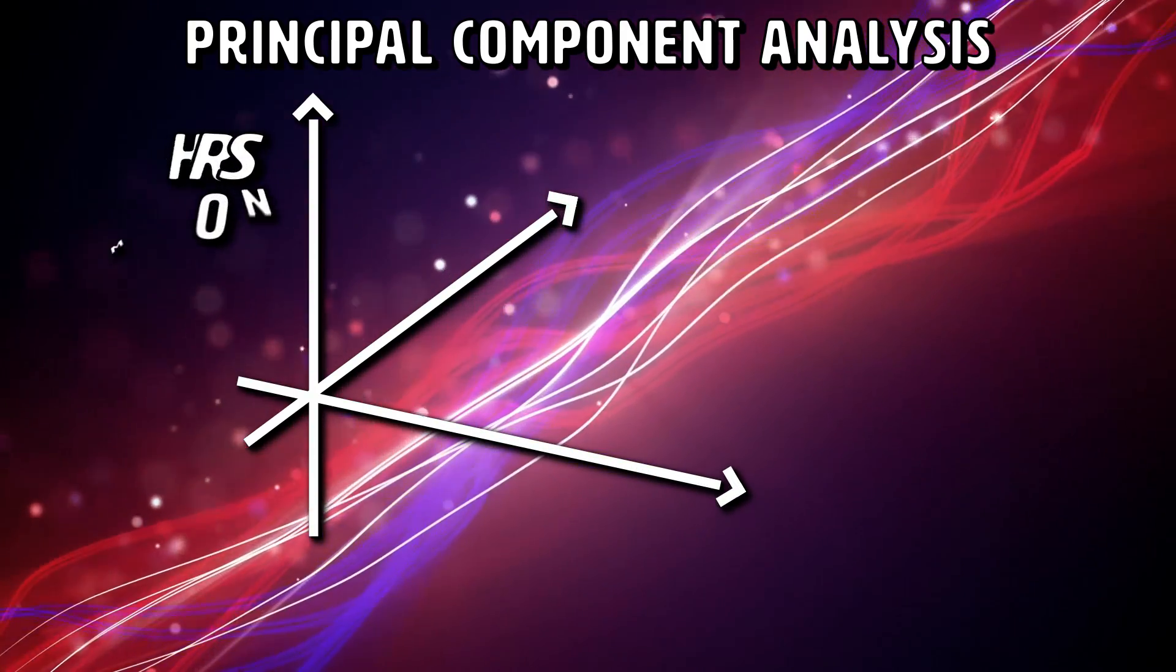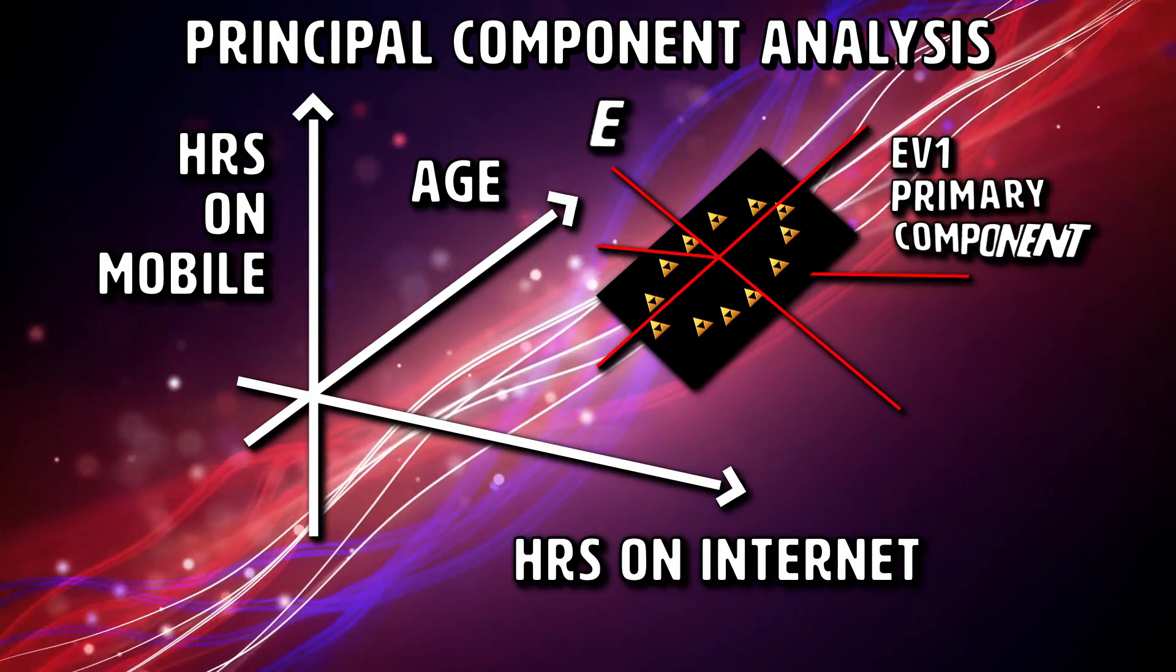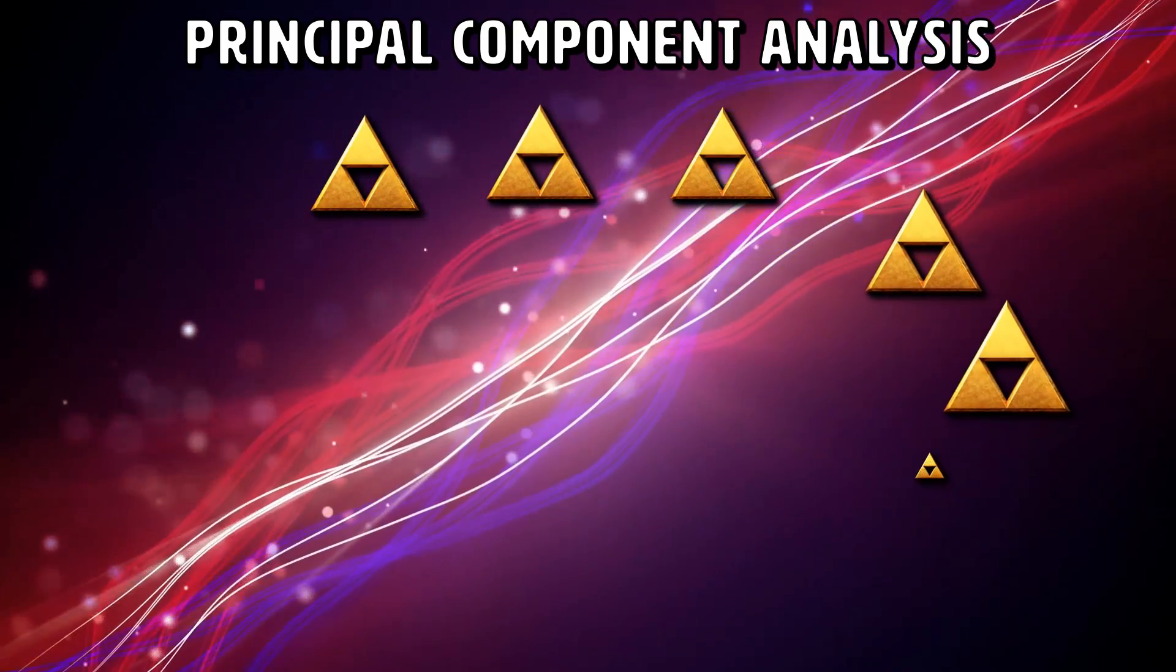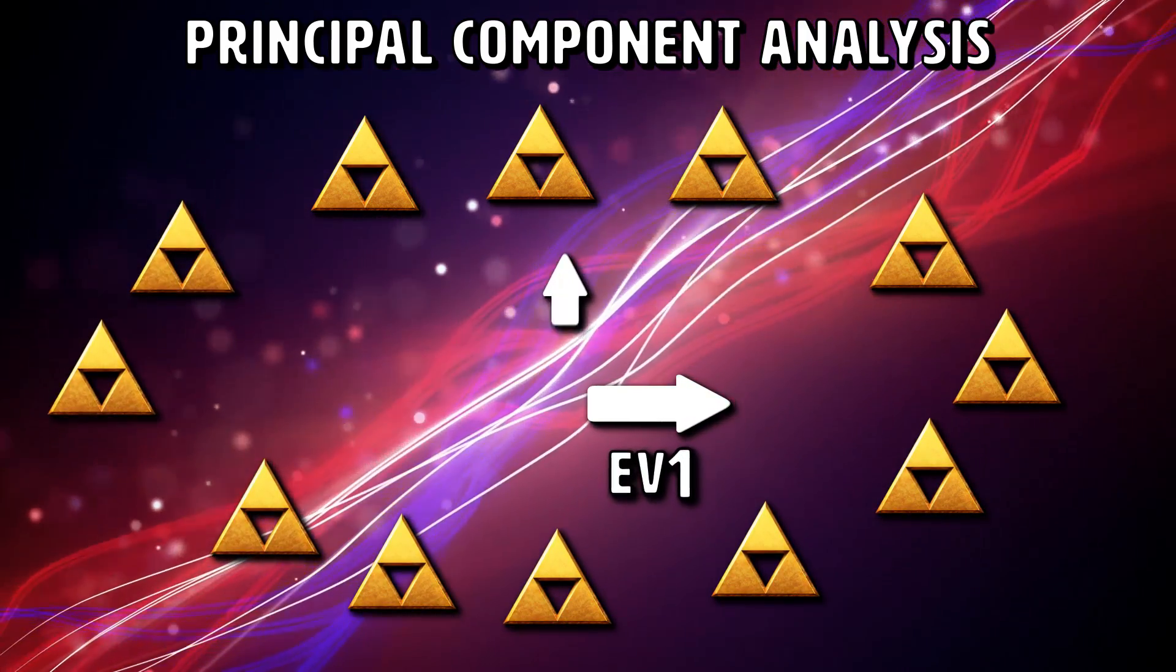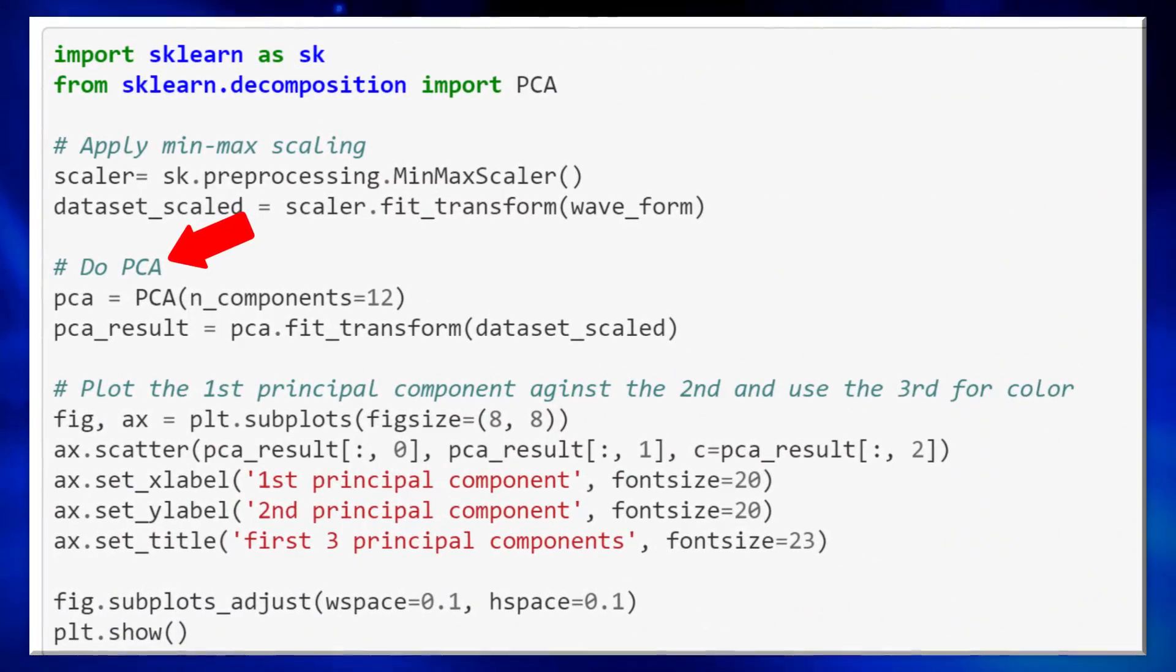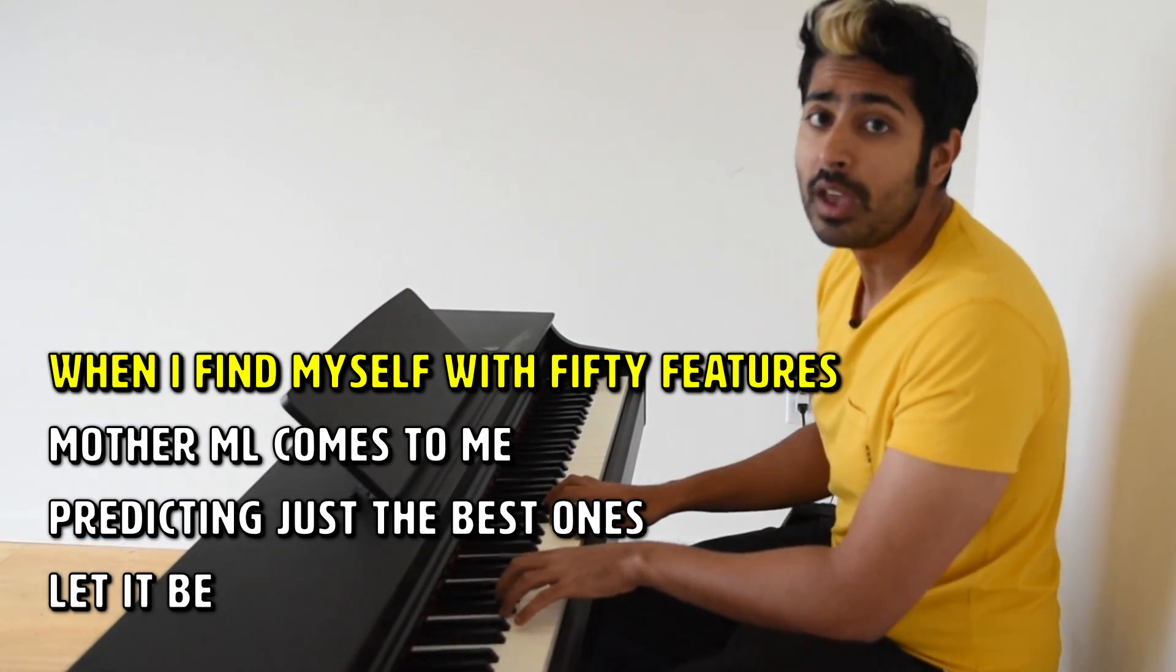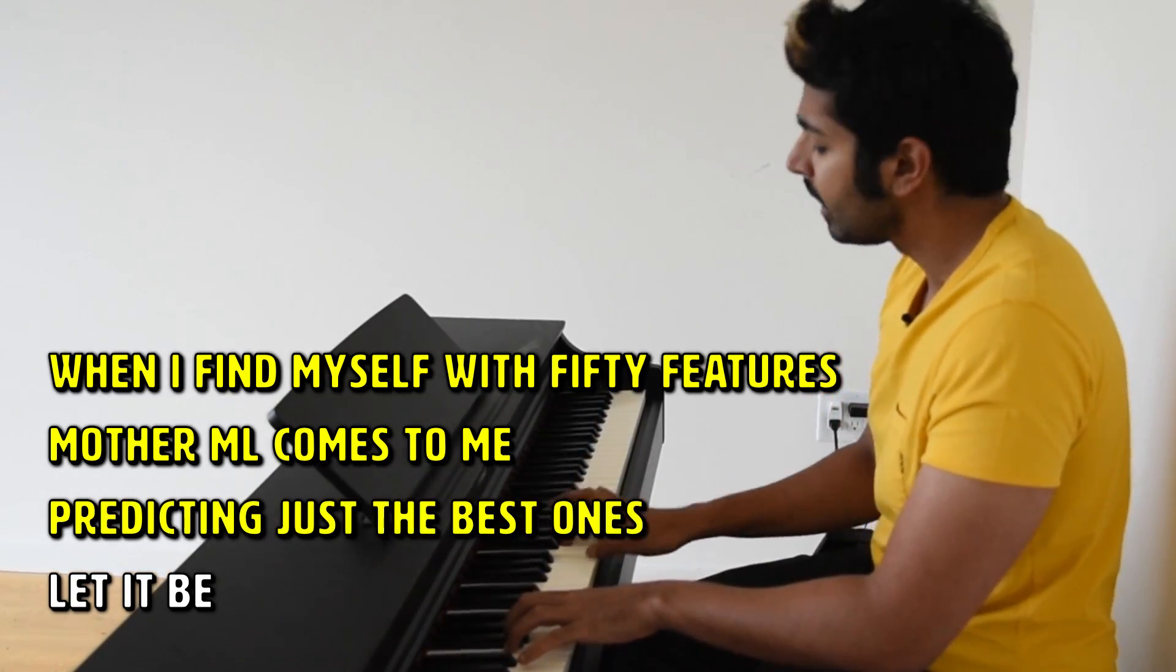In a three-dimensional dataset, there are three variables. Imagine all the data points lie on a piece of paper-sized plane in this 3D graph. When we find the three eigenvectors and values, two will have large eigenvalues, and one of the eigenvectors will have an eigenvalue of zero. If we rearrange our axes to be along the eigenvectors rather than the original variables, discarding the third one, we essentially get rid of the useless direction and are able to represent it in two dimensions. We can do this in a single line thanks to scikit-learn. We just need to specify how many components we want. When I find myself with 50 features, Mother ML comes to me, predicting just the best ones, let it be.